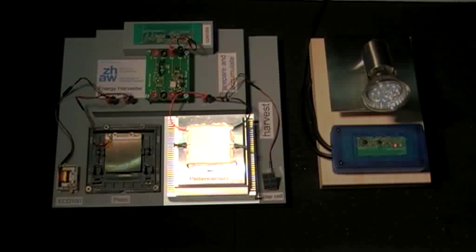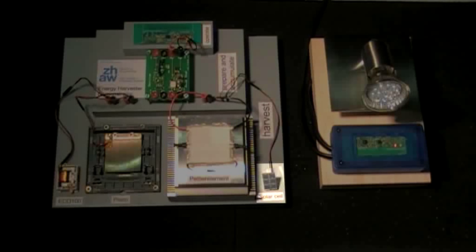The Peltier element generates a small voltage from a temperature difference on both sides. There is a solar cell, consisting of six cells in series, generating energy from incident light.